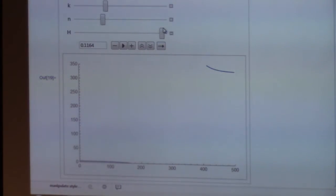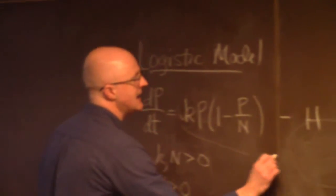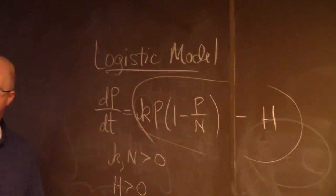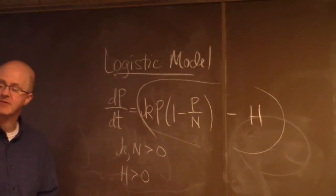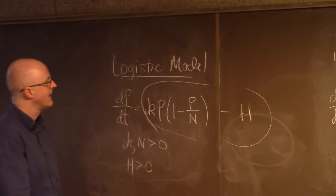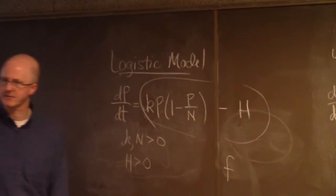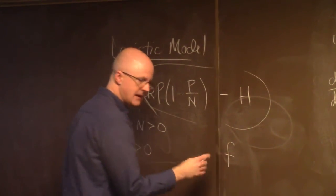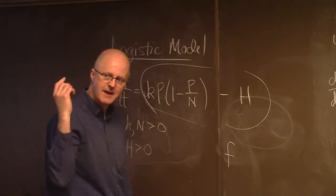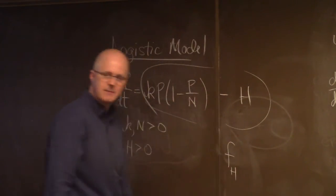Is there a way we can figure out why that happens and maybe even predict the exact value of H where it occurs? What you can do is take the right-hand side function—thought of as a function of P—and graph it to see what happens as H changes. There are three parameters K, N, and H, so technically they should all be subscripts of the right-hand side function. I'll plug in specific values of K and N and only make H the subscript.